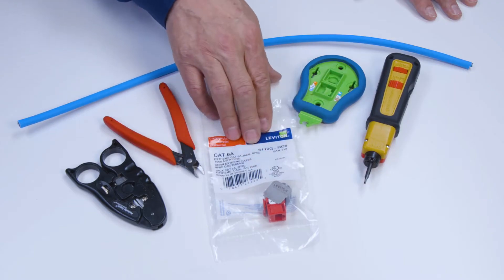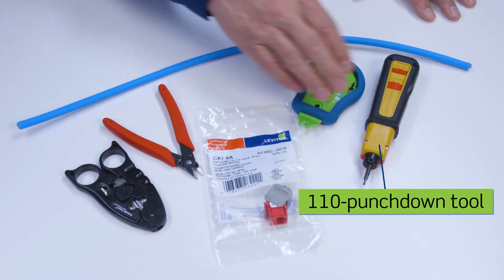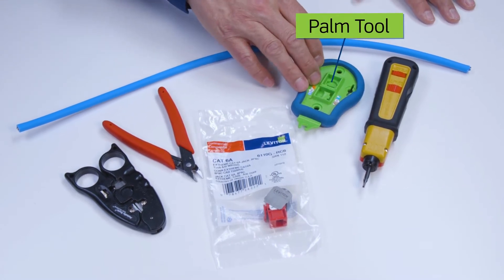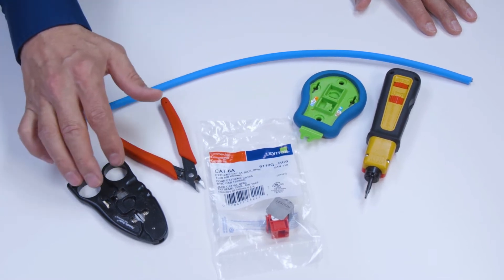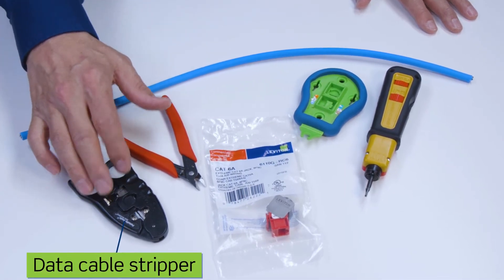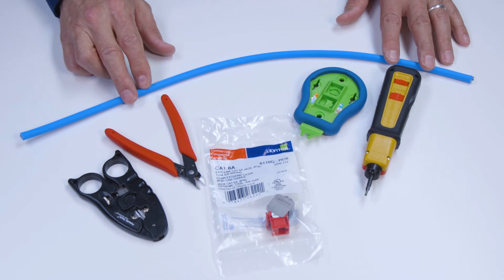For the extreme jack, we'll use the following tools: A 110 punch tool, a Leviton palm termination tool, a flush cutter, a data cable stripper, and a piece of Category 6A cable.